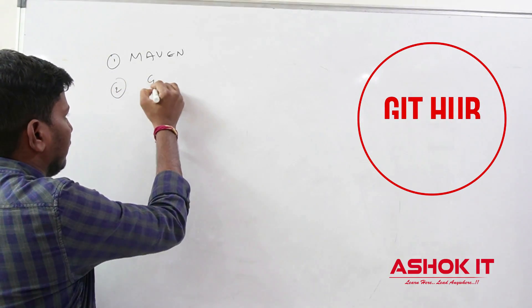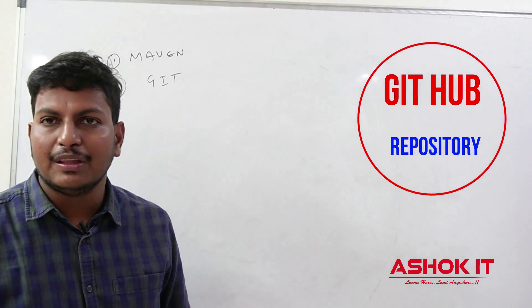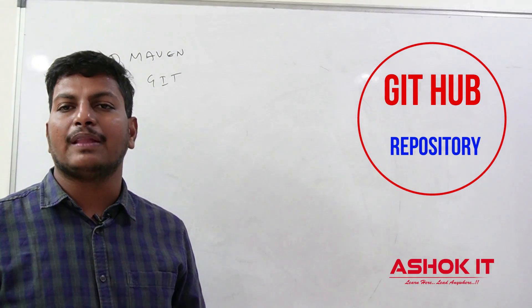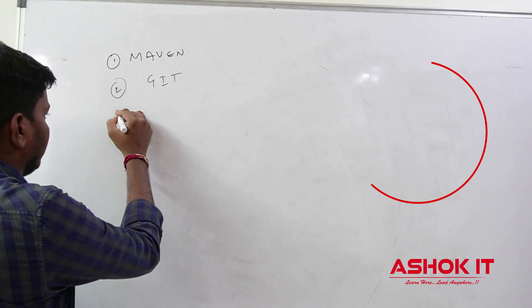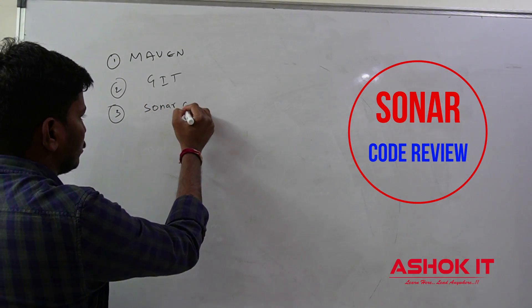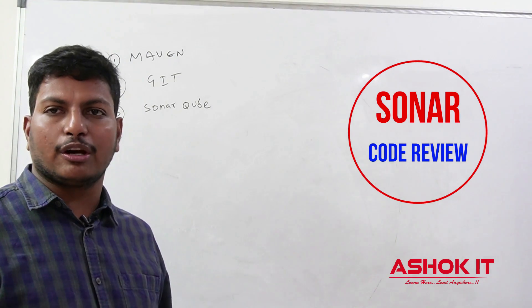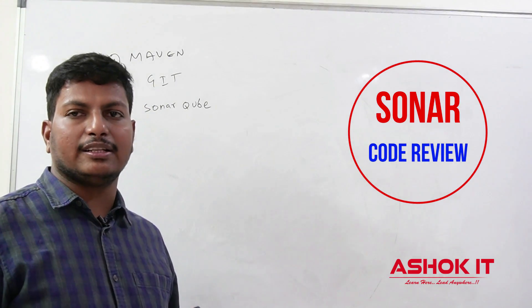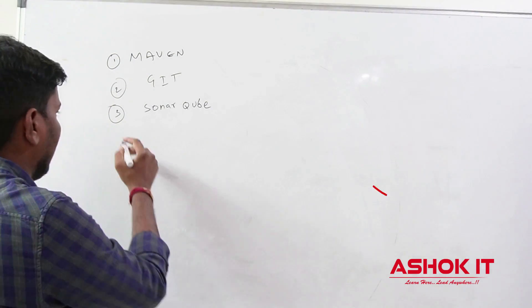Second one is Git. Git we are going to use as version control software. The project development team will store their source code into a Git repository. We need to take the code from the GitHub repository to perform our DevOps operations. Git we are going to call as repository software. Third one, we are going to use SonarQube. SonarQube is used for code review. When developers have done the coding, we need to perform the review of that code and share a code review report. If any issues are there, developers are responsible to fix those issues. For code review purposes, we are going to use SonarQube.